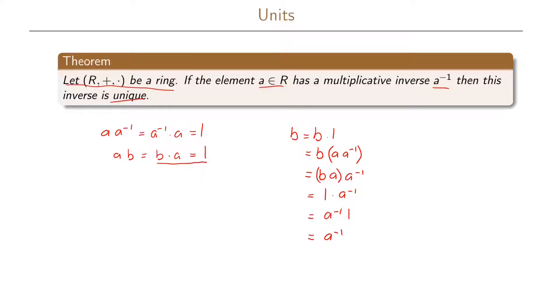So what we have shown here is that b equals a to the minus 1, proving that the multiplicative inverse is unique.